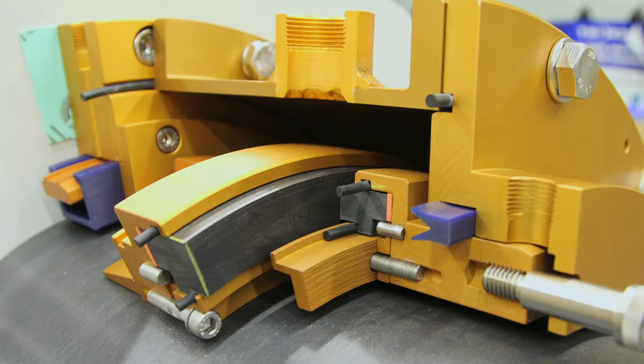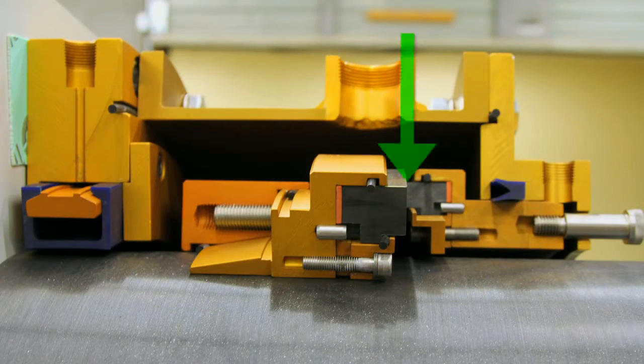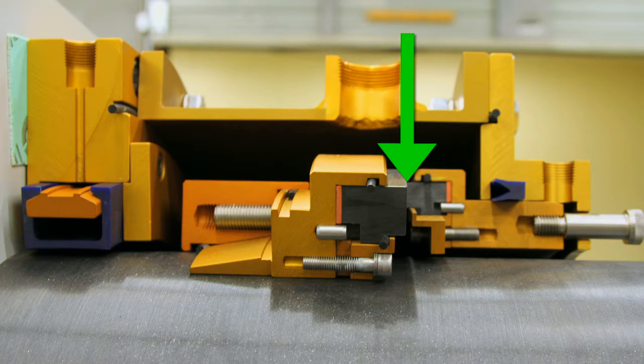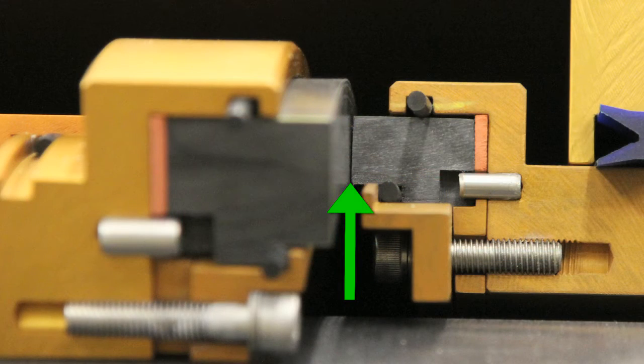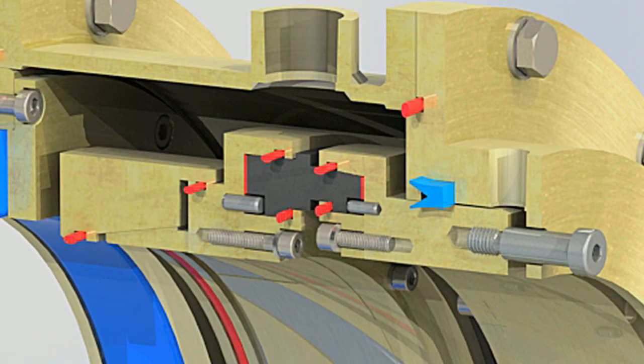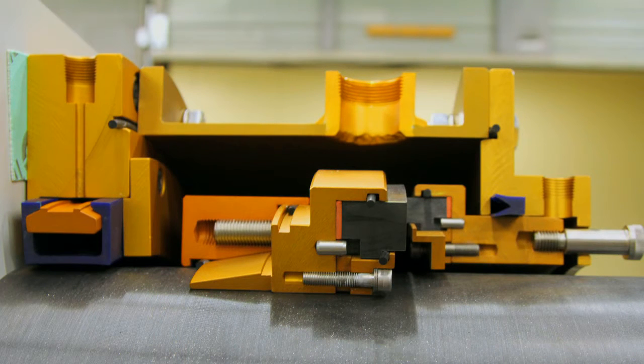This seal is what is called a stationary balanced axial face seal. It is designed to operate with the sealed water acting against the outside diameter of the seal faces. On the inside of the faces is the ambient pressure of the engine room. A pressure gradient is established across the faces from the pressure inside the stern tube to ambient. The after face rotates with the shaft and the forward face is stationary and spring loaded.